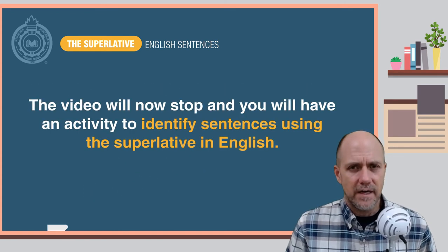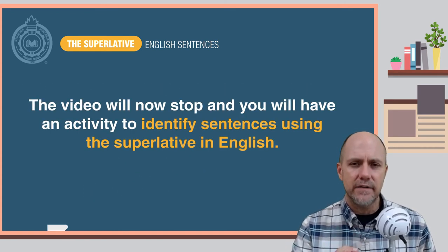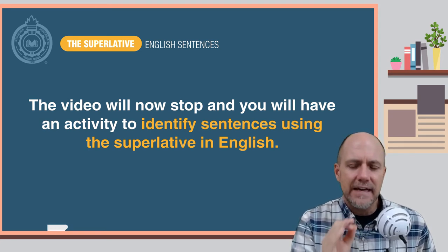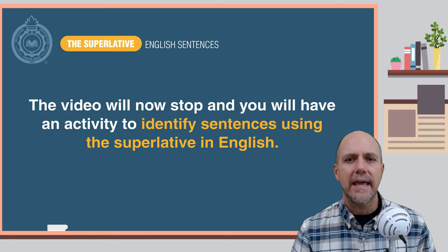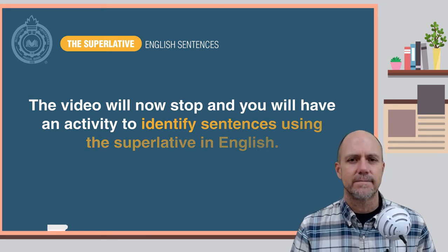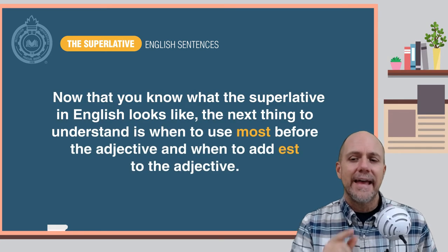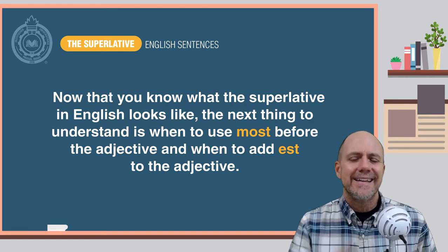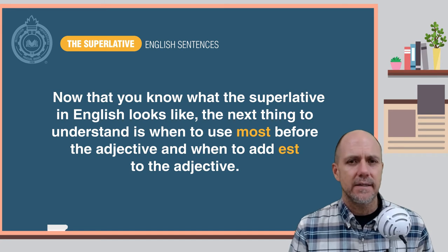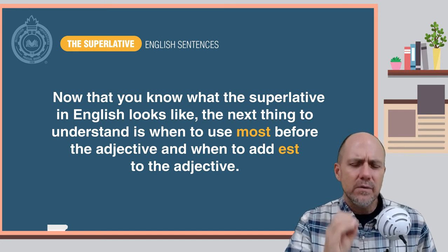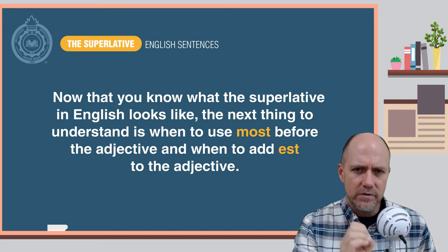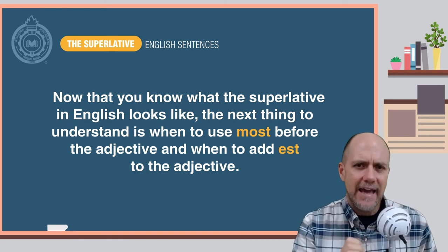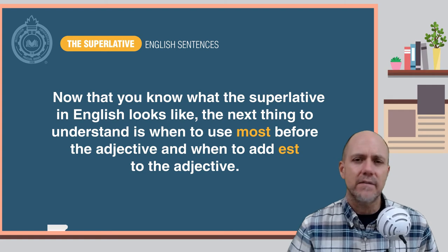The video will now stop, and you will have an activity to identify the superlative adjective in sentences in English. Now that you know what the superlative in English looks like, the next thing to understand is: when do you use the word 'most' to form the superlative, and when do you just add -est to the end of the adjective?